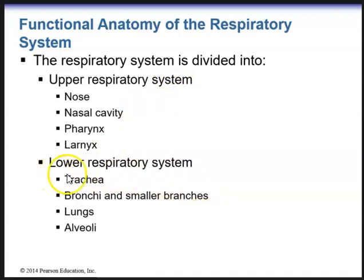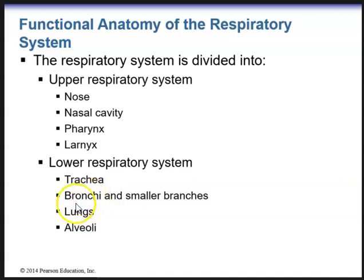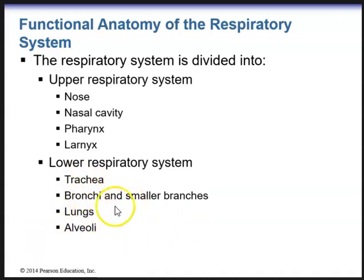The organs of the lower respiratory system include the trachea, the bronchi (plural), and their smaller branches. We have right bronchus and left bronchus — bronchi being plural. We also have the lungs and the alveoli. These structures make up the lower respiratory system.